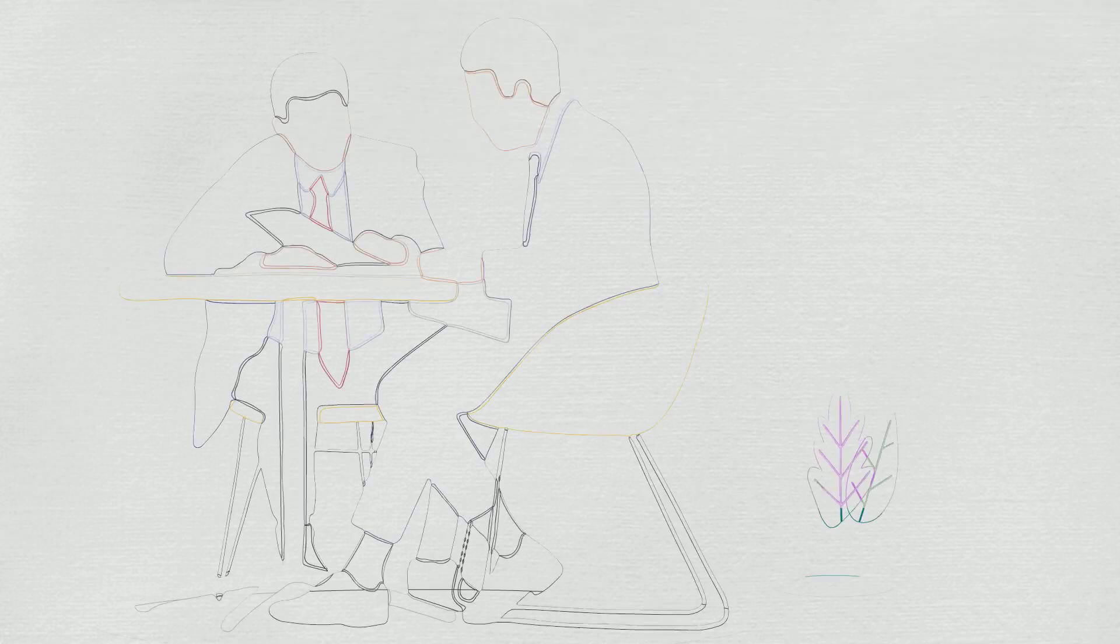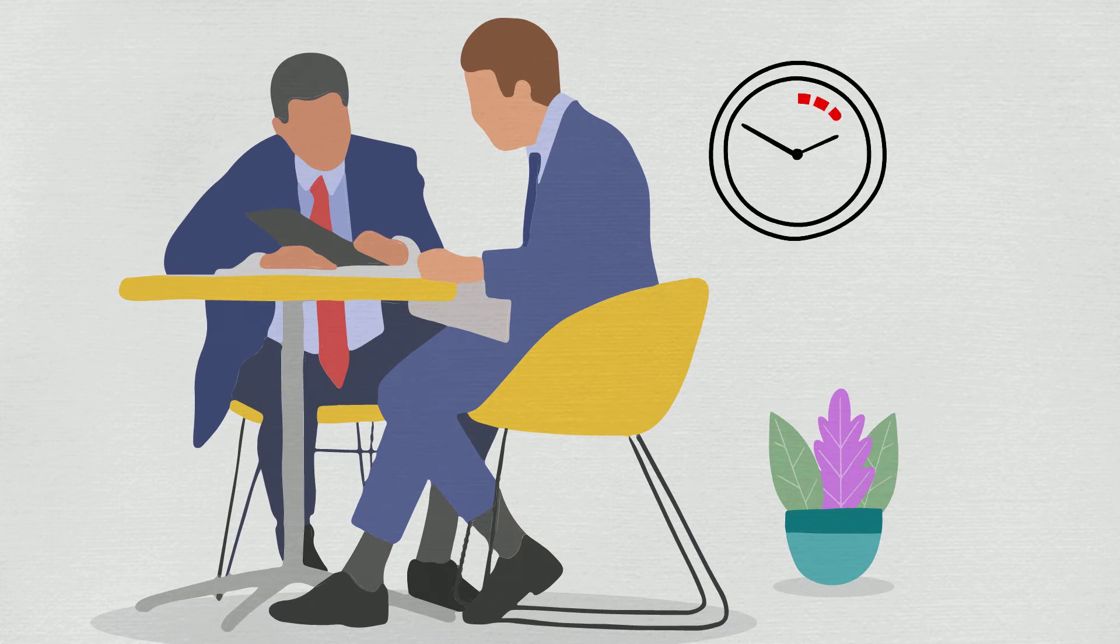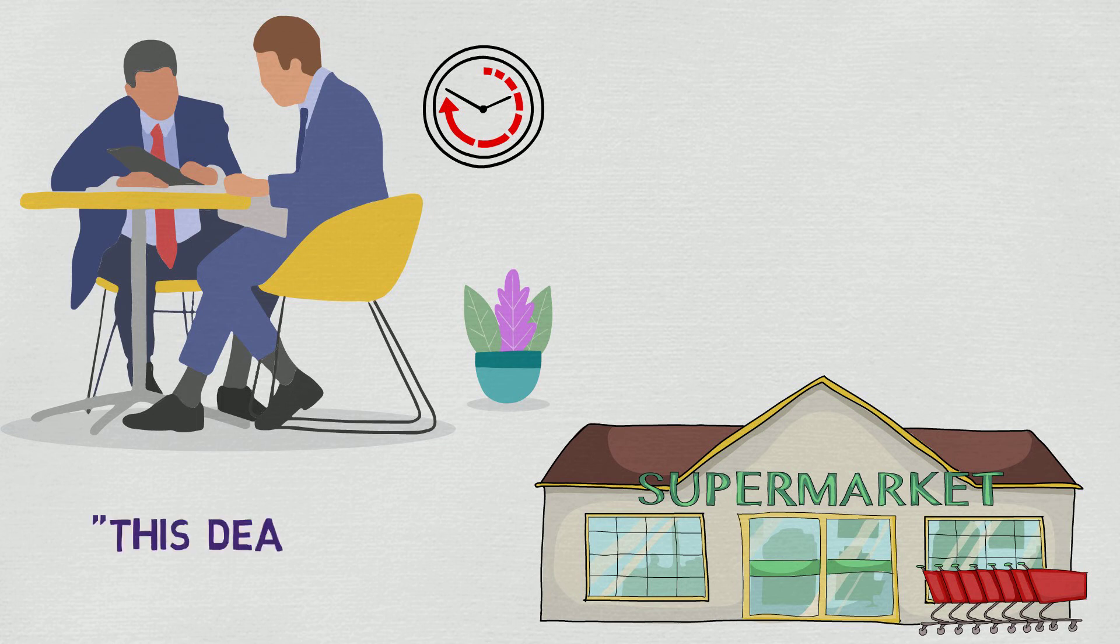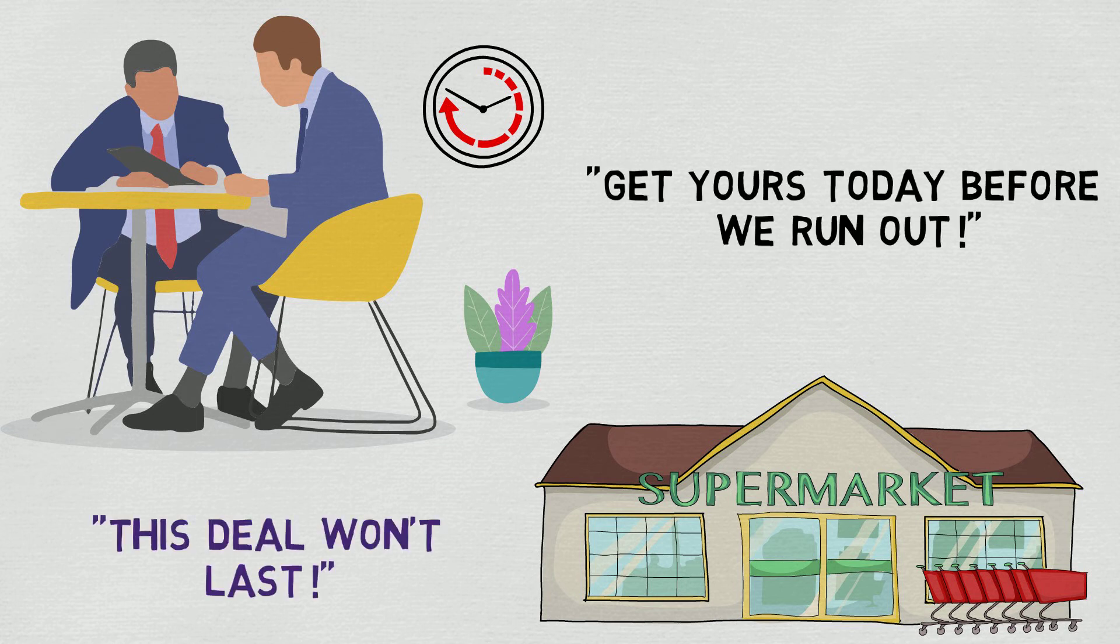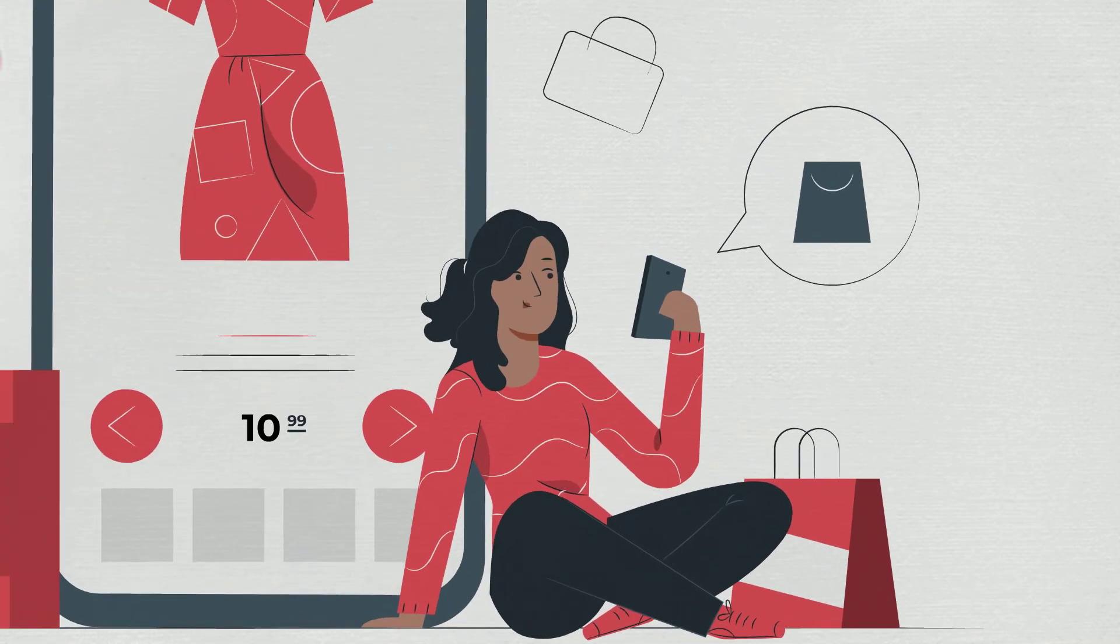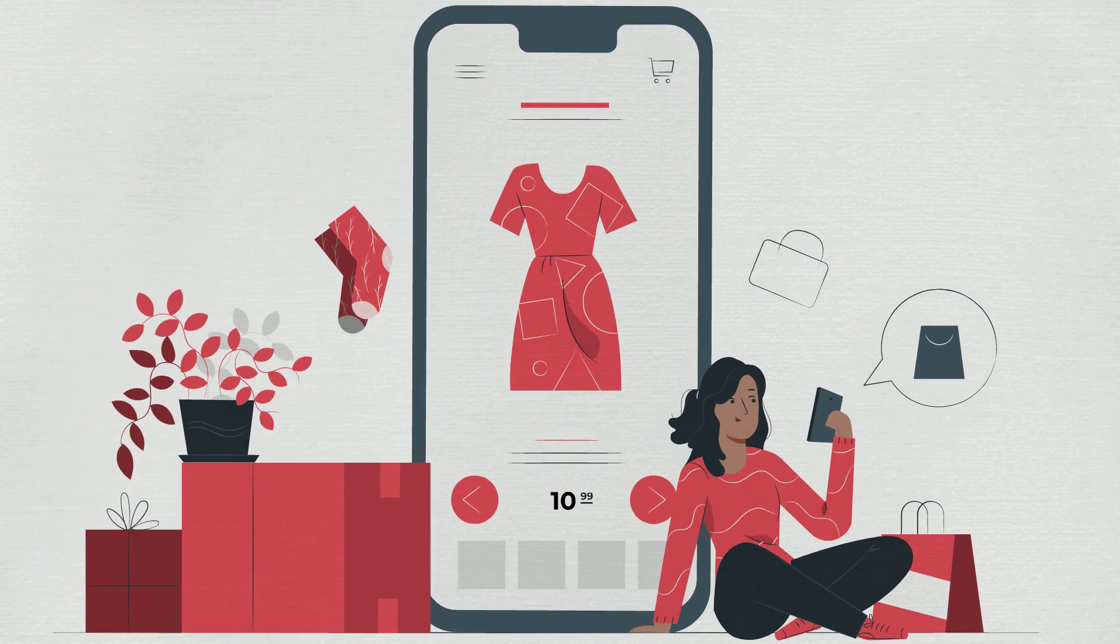Number five, use urgency to push deals along. Another psychological trick for those doing deals is to use a sense of urgency to get them going. We can easily see this in stores when they say, this deal won't last or get yours today before we run out. Online shops also use this by telling you when other people have your item in their cart or when a purchase is made before you.